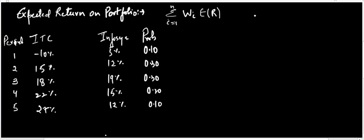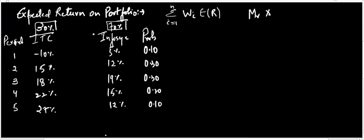Mr. X decided to invest 30% of his wealth into ITC and 70% of his wealth into Infosys. So he has a portfolio containing ITC and Infosys, in which ITC Limited has a 30% weight and Infosys has a 70% weight.